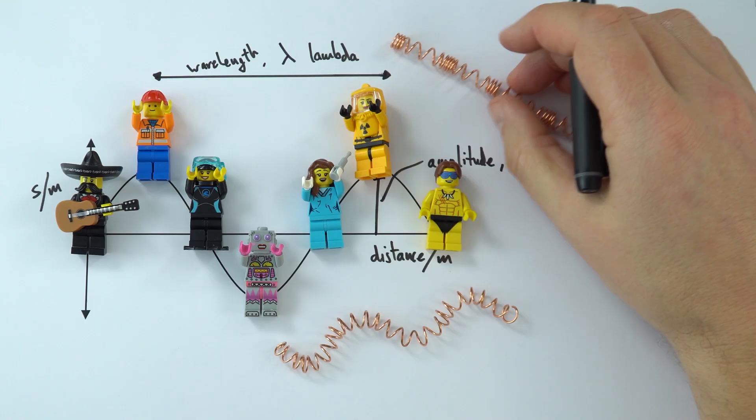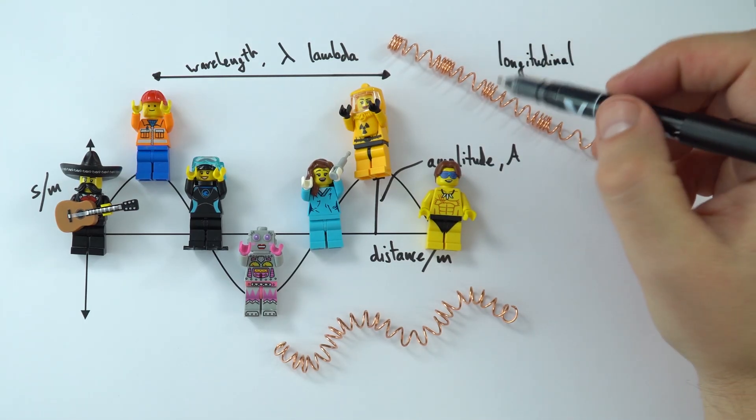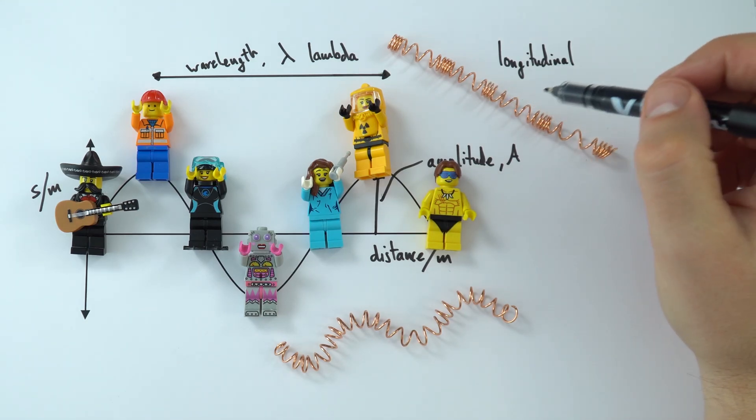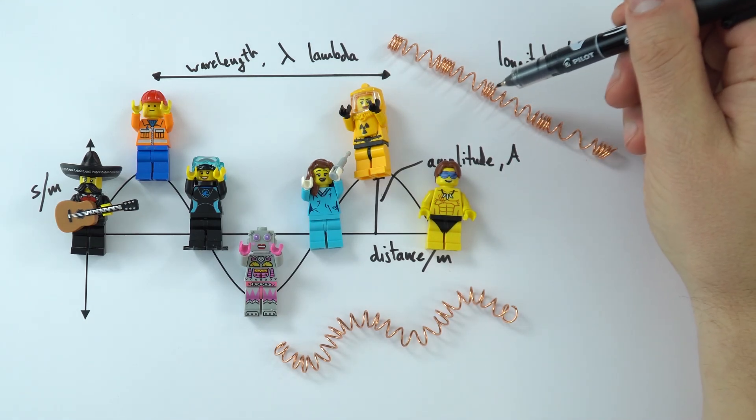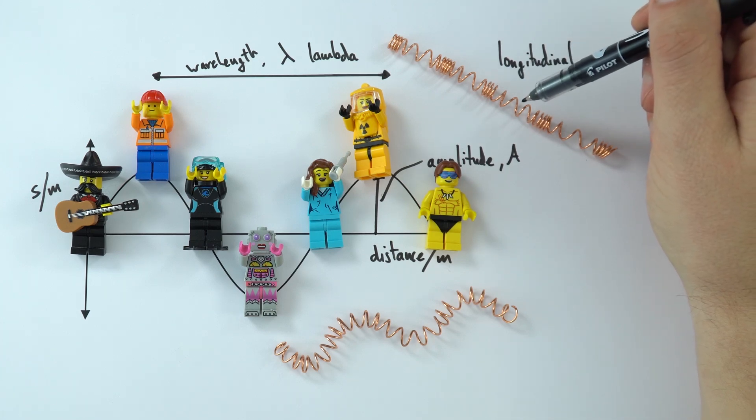We've just kind of frozen it in time. On a longitudinal wave, what we have are the particles oscillating or vibrating in the same direction as energy transfer. And what we see is that there are regions where we have compression, and there are also regions where we have rarefaction.